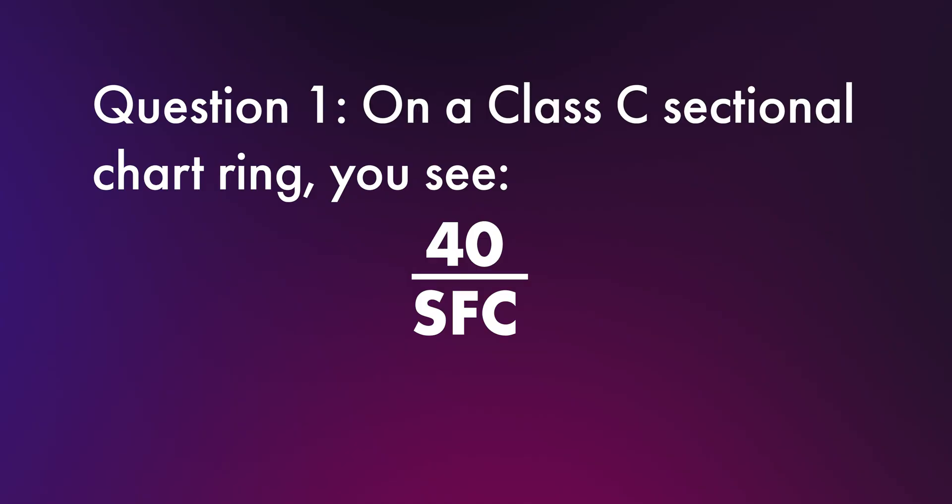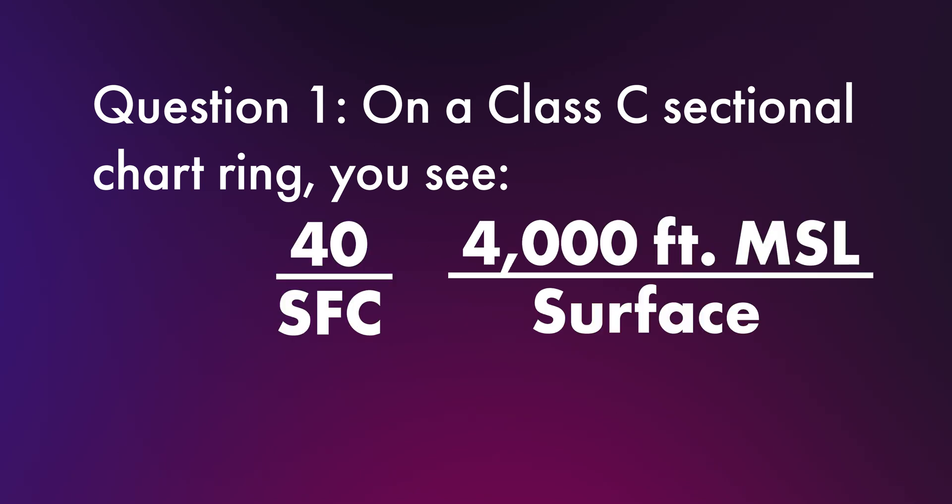Let's wrap it all up with a little quiz. Feel free to pause after I read the question if you need some time before I reveal the answer. Question one: on a Class C sectional chart ring, you see 40 slash SFC. What does it mean? The answer is surface to 4,000 feet mean sea level.